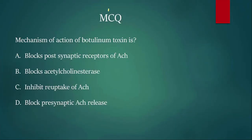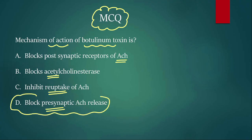Let us move to the next MCQ. Repeatedly asked question. Mechanism of action of botulinum toxin is: blocks postsynaptic receptor of acetylcholine, blocks acetylcholine esterase, inhibit reuptake of acetylcholine, block presynaptic acetylcholine release. Please try to answer this. Yes. If you are telling option D then you are right. Botulinum toxin also called as botox which is known to decrease presynaptic acetylcholine release.